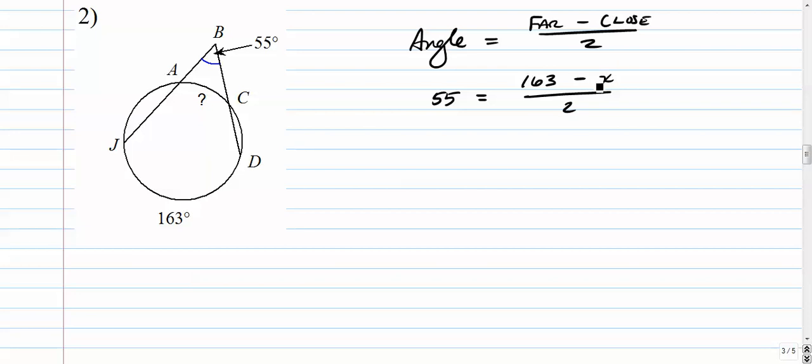Moving x in the numerator, what I like to do is multiply both sides by 2. When we do that, we multiply the right side by 2 and the left side by 2. The 2's cancel out. On the left, we have 110. 163 minus x. We'll subtract 163 from both sides. So, 110 minus 163, that is going to be negative 53 equals negative x. So, 53 is x.